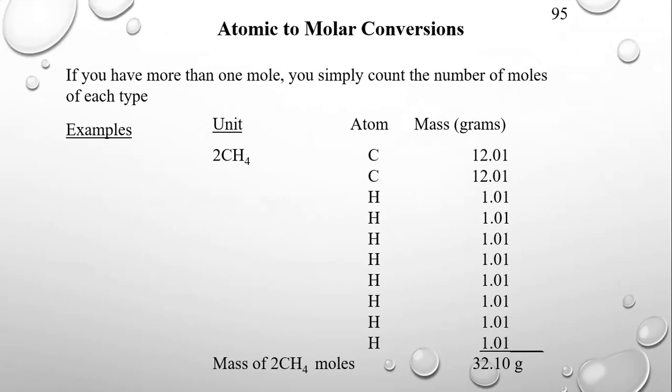Here's another example with methane. If you have more than one mole, you simply count the number of moles of each type. So 2CH4 means you're going to have two carbons and 2 times 4, or 8 hydrogens. You get the numbers straight off the periodic table, but now instead of thinking of them as atomic mass units, we think of them in terms of grams. The mass of 2CH4 moles is 32.1 grams — something you can actually weigh on a scale.